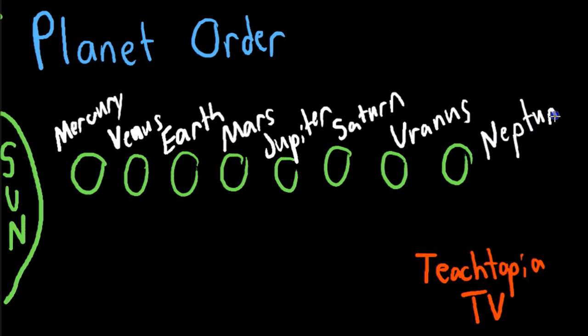Now, the way to memorize this is by looking at the first letter: M, V, E, M, J, S, U, N, and coming up with a little Teachtopia tip that will help you. So let's go ahead and do that.